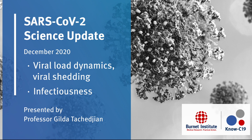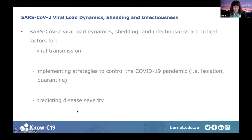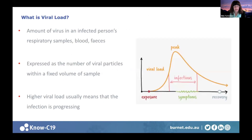Today's topic is SARS-CoV-2 viral load. Viral load dynamics, shedding, and infectiousness are critical factors for viral transmission. They're important for implementing strategies to control the COVID-19 pandemic, such as isolation and quarantine, and may also be useful for predicting disease severity.